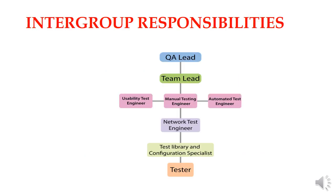We will diagrammatically explain the intergroup responsibilities. At the top is the Quality Assurance Leader, then the Team Lead. The Team Lead has interaction with the Usability Test Engineer, Manual Testing Engineer, and Automated Test Engineer. Then it goes to the Network Test Engineer, and then the Test Library and Configuration Specialist, after which the Tester comes.